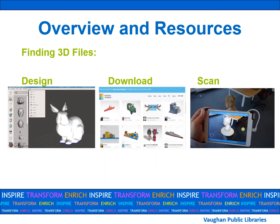There are three different ways to get 3D files online. 3D files are created through computer-aided design or CAD software. You can either: a) create your own files using 3D design software, b) find files online that other people have created and have declared public use, or c) use a 3D scanner to scan a real-life object that can then be printed.